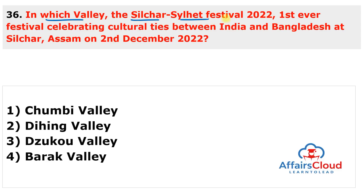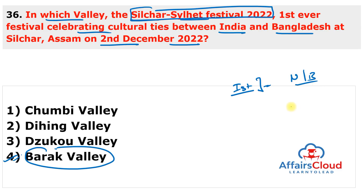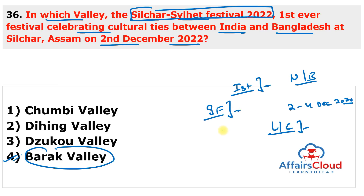Question 36: In which valley was the Silchar-Sylhet Festival 2022 held — the first-ever festival celebrating cultural ties between India and Bangladesh — held at Silchar, Assam on 2nd December 2022? The answer is Barak Valley. The festival was held in Barak Valley, Silchar, Assam from 2nd to 4th December 2022, celebrating linguistic and cultural ties between the Barak Valley region of Assam and the Sylhet segment of Bangladesh. It was organized by the India Foundation under the Ministry of Culture, in association with the Bangladesh Foundation of Regional Studies.